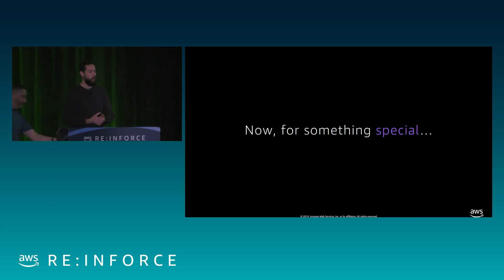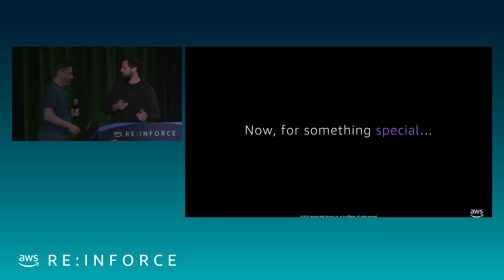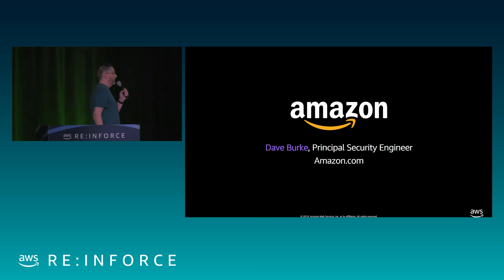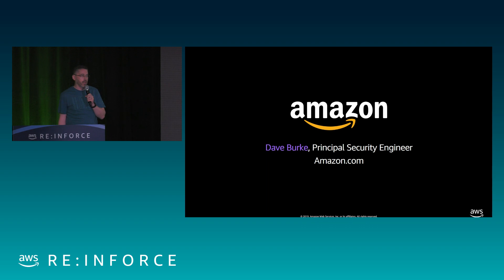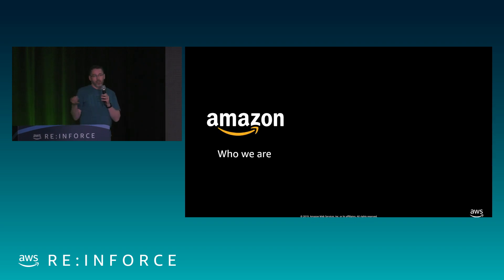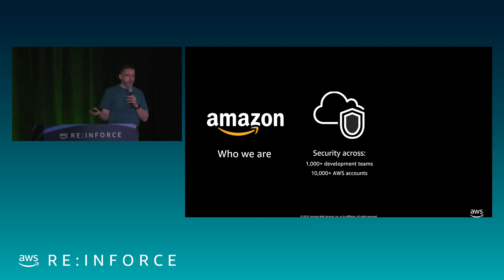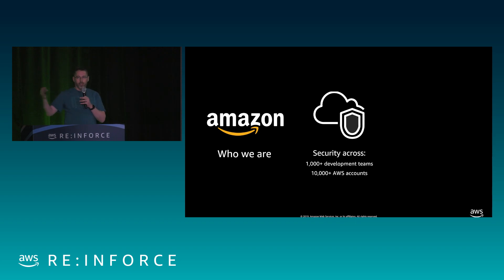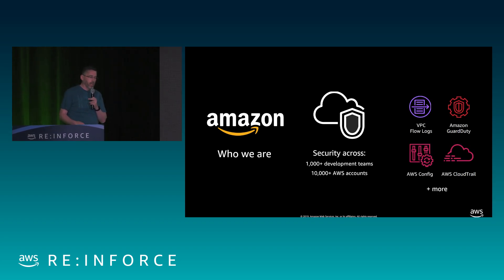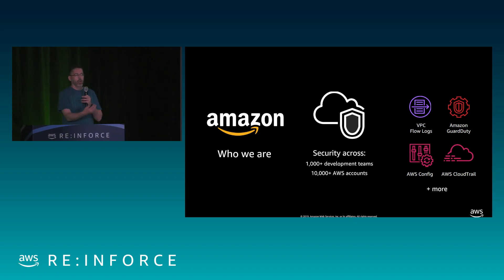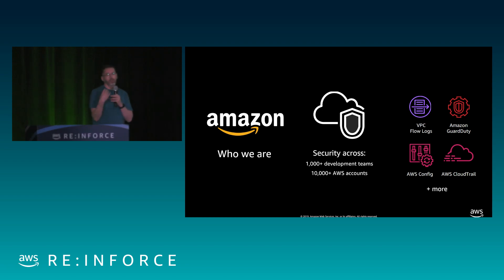Now we have Dave Burke from our Amazon.com team, a principal security engineer. I'm Dave Burke — I work in the retail consumer division of Amazon, which has its own dedicated security team. We take care of thousands of development teams, tens of thousands of AWS accounts, across global scale, every AWS region, every AWS service. We love every AWS security service that gives us data: VPC flow logs, GuardDuty, Config, CloudTrail — whether it's findings or raw data we then process ourselves to create findings and drive security up.